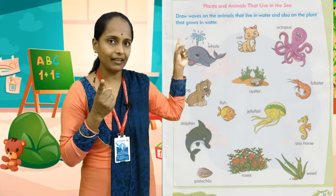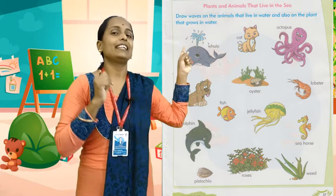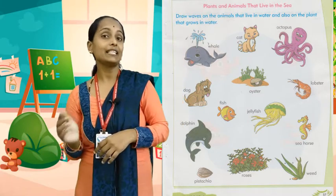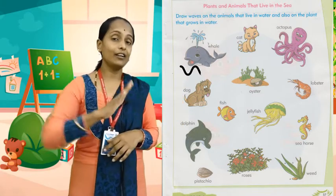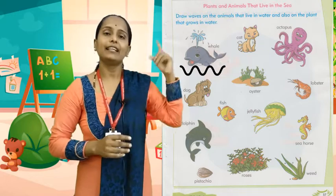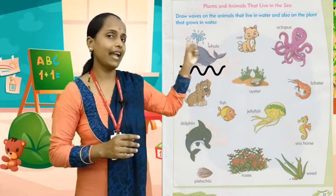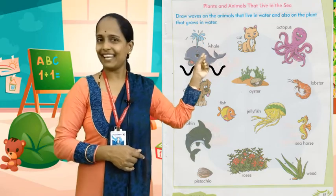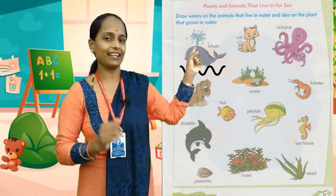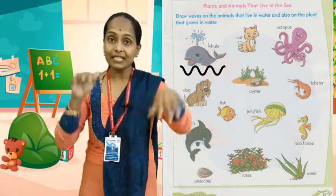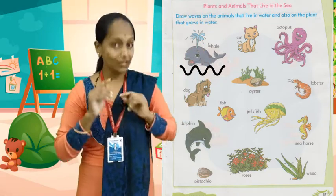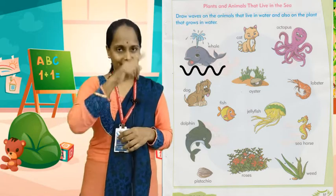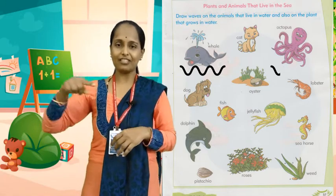Is it in the sea? Yes, it lives in the sea. So under it, what do we have to do? Draw waves. Next — cat. Does a cat live in the sea? No, it lives outside. Okay, octopus. Does an octopus live in the sea? Yes. So what do we have to do? Draw waves.